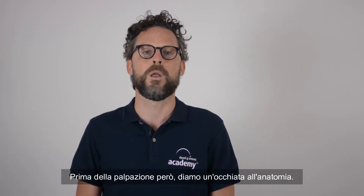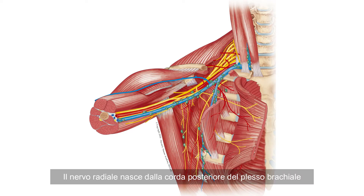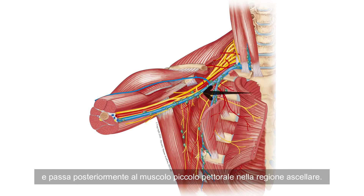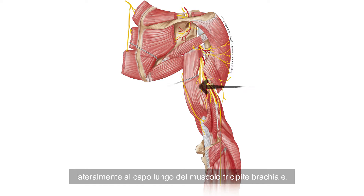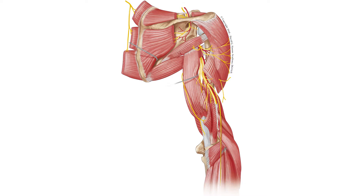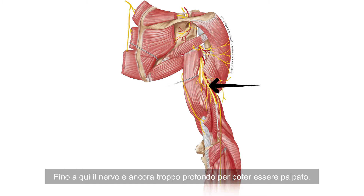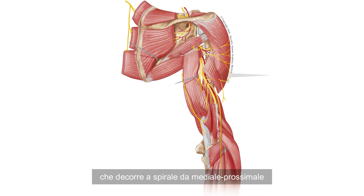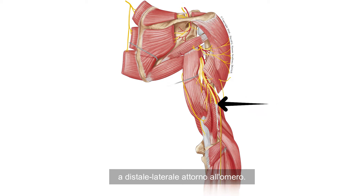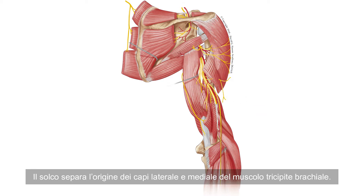Before palpation we have to have a close look at the anatomy. The radial nerve arises from the posterior cord of the brachial plexus and passes posteriorly to the pectoralis minor muscle into the armpit. It reaches the posterior part of the upper arm laterally on the long head of the triceps brachii muscle. Up to here the nerve is too deep to be palpated. The nerve lies within the radial sulcus, also known as the radial groove, which runs in a spiral course from proximal medial to distal lateral around the humerus. The sulcus separates the origins of the lateral and the medial head of the triceps brachii muscle.